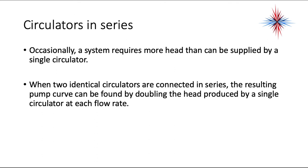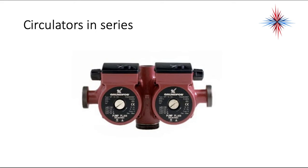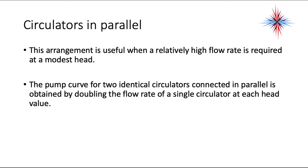Occasionally a system requires more head than a single circulator can supply. When two identical circulators are connected in series, the resulting pump curve is found by doubling the head at each flow rate. Circulators can also be connected in parallel when a high flow rate is required at modest head — parallel connection doubles the flow rate, obtained by doubling the flow at each head value.